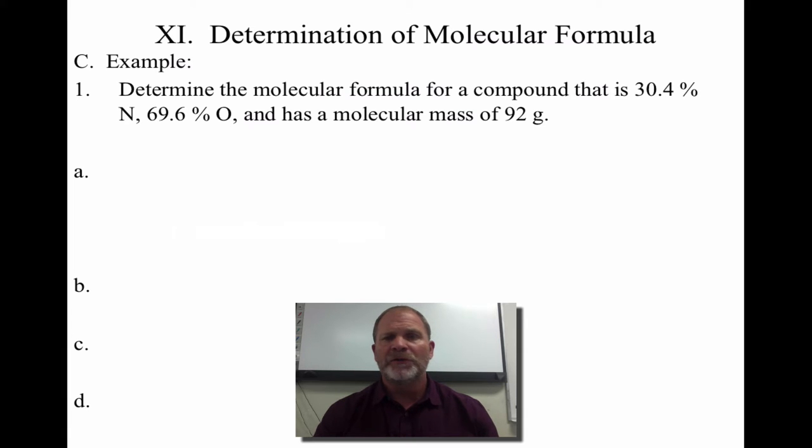Example. We go to, again, we see a scene of a crime. We find a sample is made up of 30.4% nitrogen and 69.6% oxygen. It has a molecular mass of 92.